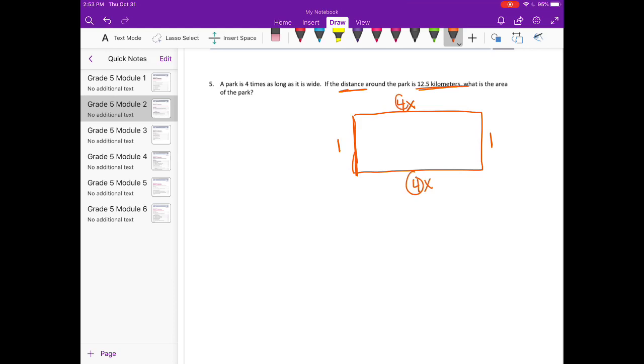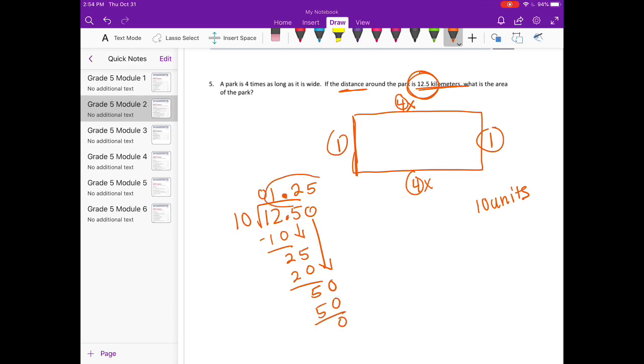But we do have the scale of them. So I'm going to take this 4 and 4 and 1 and 1. And we know that we have 10 units. And I'm going to divide those 10 units by the 12 and 5 tenths to see what the lengths actually are. So I'm going to do 12 and 5 tenths divided by 10. 10 goes into 25 twice. I'm going to bring down a 0. 10 goes into 50 5 times. So we get 1 and 25 hundredths.